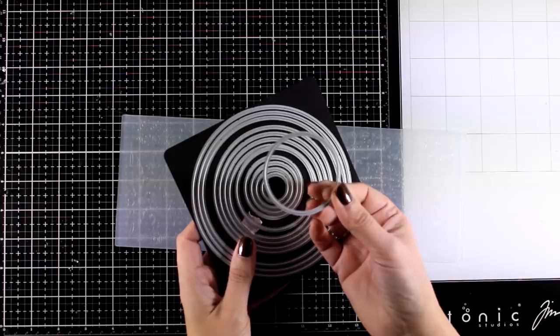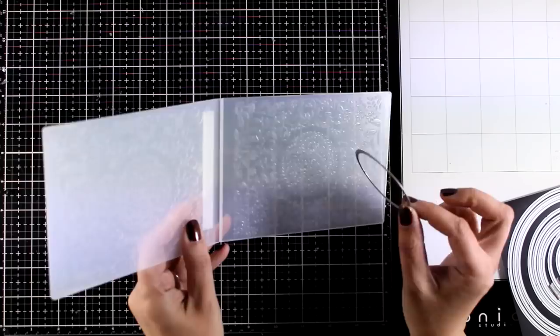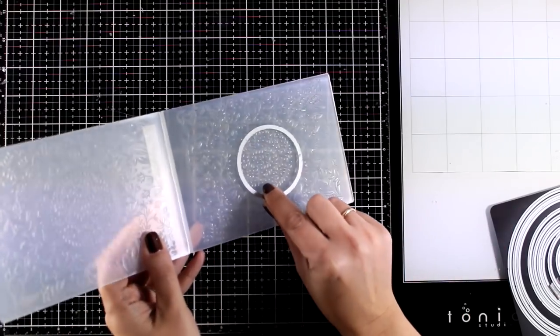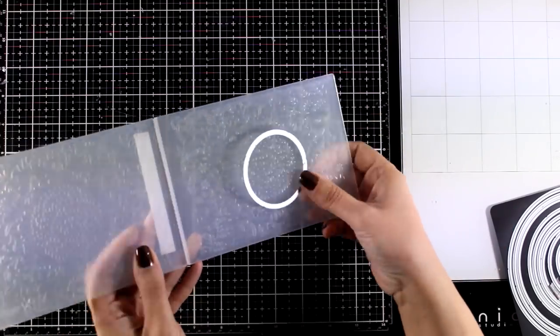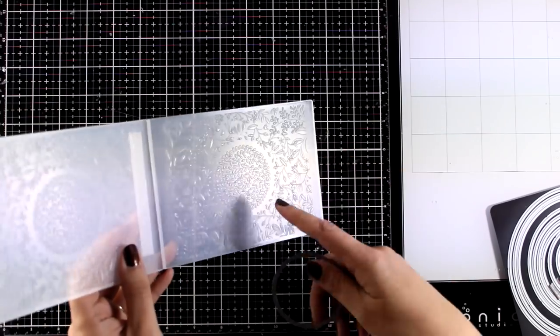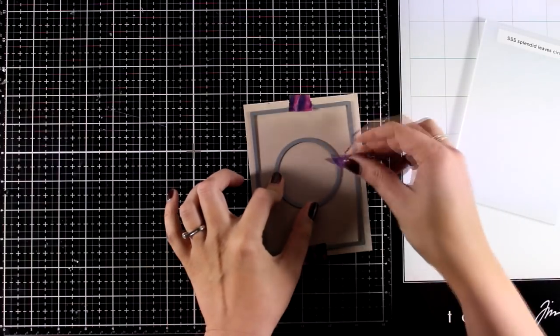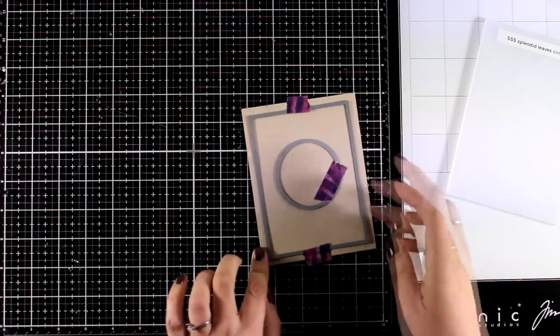Now of course you can use a paper and run it through with your embossing folder however I'm going to show you another way on how you can use it. Since there is this circle I looked through my stash and I found this circle die that fits the circle at the center of the design. So I'm going to cut out a panel with the circle at the center to create a little window.